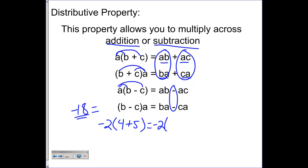you're going to show it as a negative 2 times the 4 plus a negative 2 times the 5. And you'll notice in both cases, the negative followed the 2.